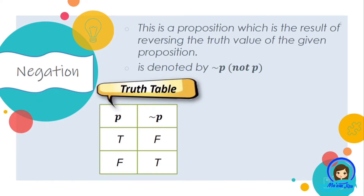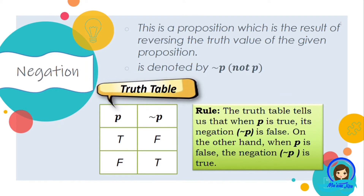The truth table tells us that when P is true, its negation or not P is false. On the other hand, when P is false, the negation not P is true. So basically, we just reverse the truth value of the given proposition. If it is true, then its negation is false. If the proposition is false, then its negation is true.